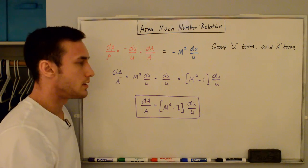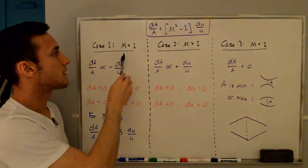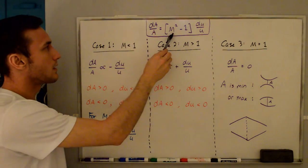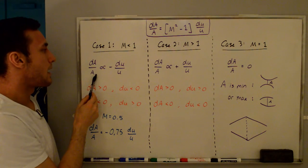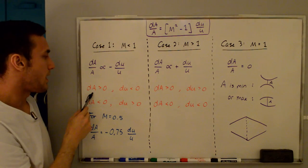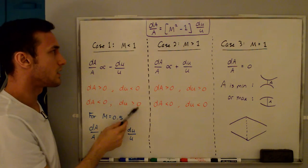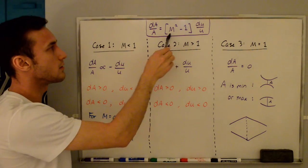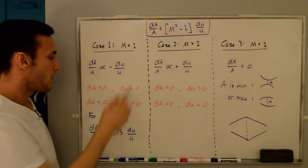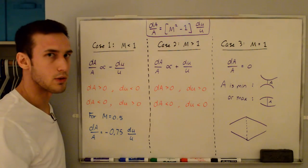Let's look at the implications of this result for three cases: subsonic, supersonic, and sonic. For the subsonic case where M < 1, plugging in gives dA/A proportional to −(du/u). This is similar to the incompressible case: increasing area means decreasing velocity, and decreasing area means increasing velocity. However, the proportionality differs — for example, at M = 0.5, dA/A = −0.75·(du/u), which is different from the incompressible case.